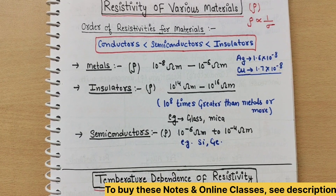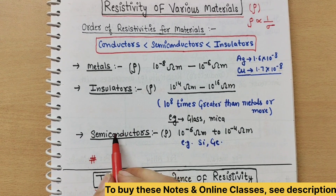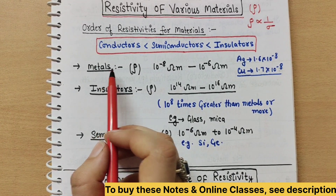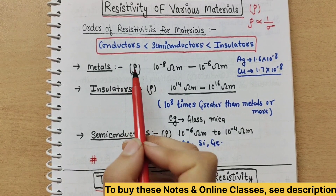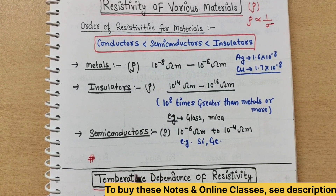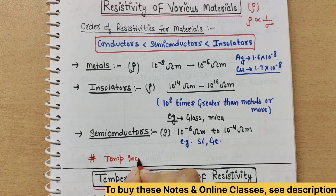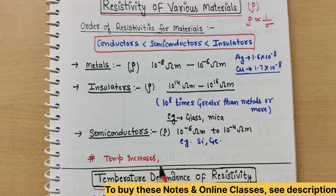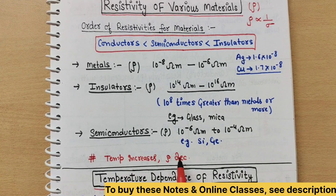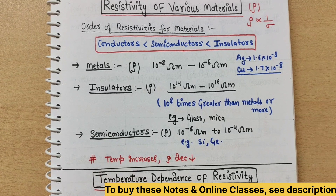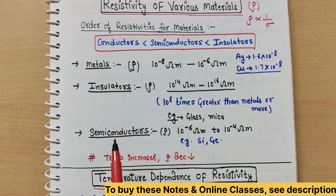An important topic coming next is temperature dependence of resistivity. In conductors (metals), if the temperature increases, resistivity also increases. However, in semiconductors, the opposite happens: if temperature increases, resistivity decreases. So resistivity decreasing with temperature increase is a property specific to semiconductors. We will cover this in detail in the next lecture.